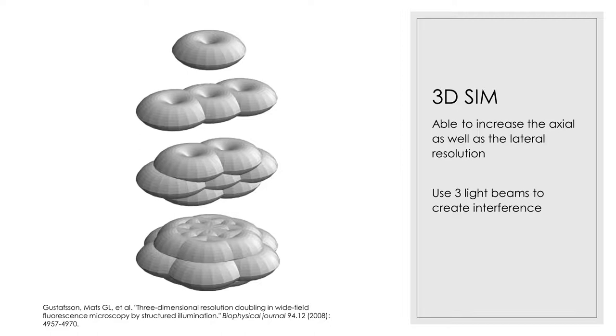In 2D-SIM, the sample was illuminated by two beams of interfering light. In 3D-SIM, three beams of light are used to produce a 3D excitation pattern. And this contains more Fourier components, so more image information can be obtained, which can fill in the missing cone and double the Z resolution.